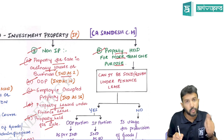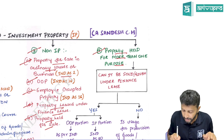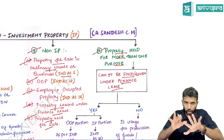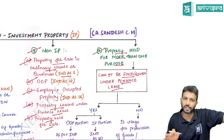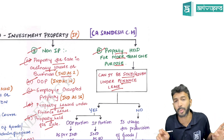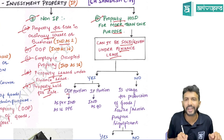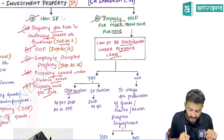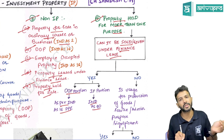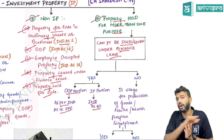If any property is held for more than one purpose, first check whether you can sell the property separately or give the property separately under finance lease. If you are using some portion for business purpose and letting out another portion, check if you can sell or lease these separately. If yes, the portion used for business purpose is classified as owner-occupied property and Ind AS 16 applies, while the portion let out is classified as investment property and Ind AS 40 applies.